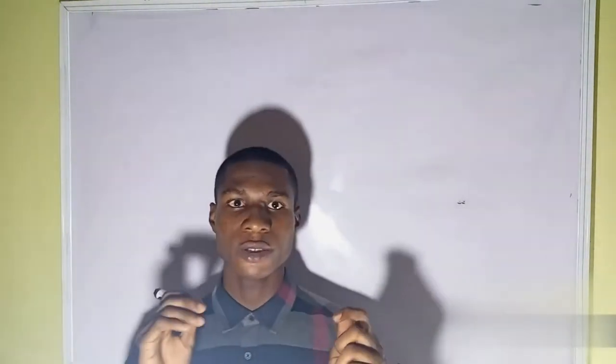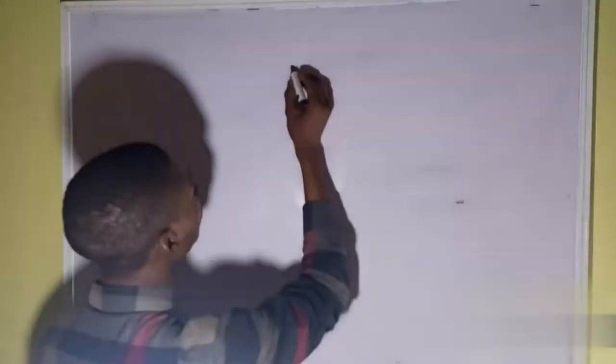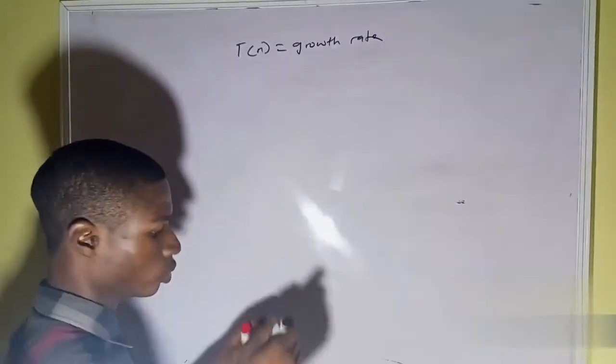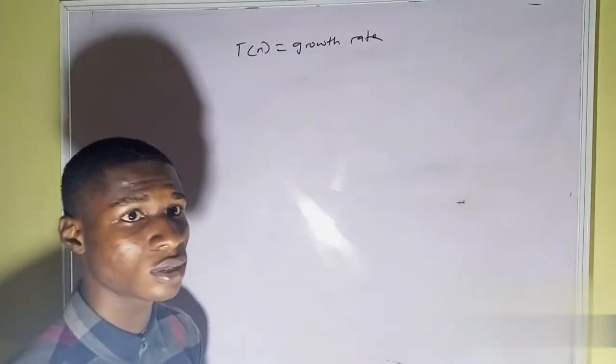Normally, as the input size increases, the running time of an algorithm also increases. So for us to be able to calculate the running time as the input size increases, we need to derive a function, and that function will denote the growth rate. Let's call that function T of n. So T of n denotes the growth rate.